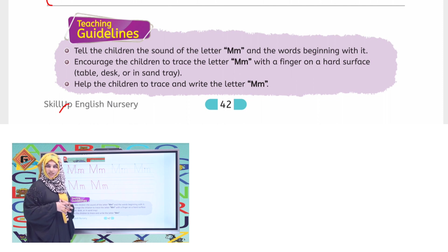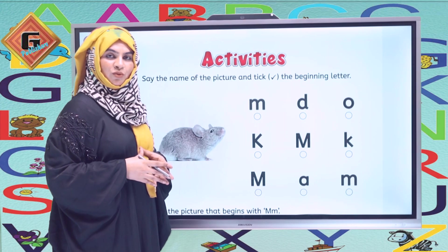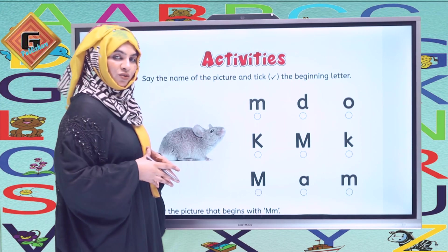Now we have some teaching guidelines. Teachers should tell the children the correct name and sound of letter M, and the beginning words. Explain the vocabulary words. Tell them the correct formation and help the children practice tracing letter M by using their finger in the air, on the table, on the desk, or on any hard surface. Help the children trace letter M in the book and write it independently.